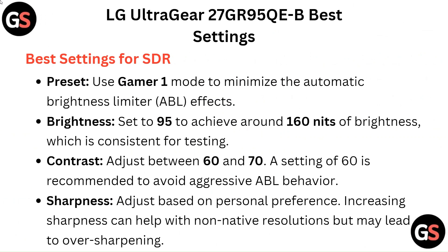Best settings for SDR: Use Gamer 1 mode to minimize the automatic brightness limiter ABL effects. Set brightness to 95 to achieve around 160 nits of brightness, which is consistent for testing.